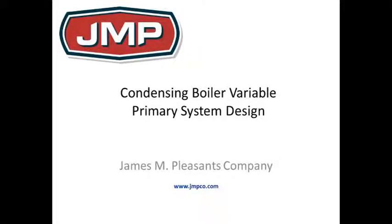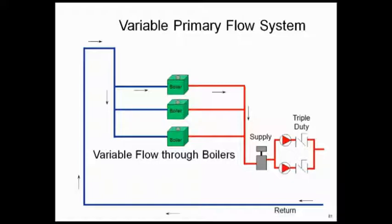Let's start with this variable primary flow concept — a great application we can make work. We have a lot of them out there, but it's a little bit sensitive to how you set them up. The concept here is one set of pumps pumping through the boiler and through the whole system — three boilers in parallel — pumping through all the heating coils, the air handlers, all the way back, and through the boilers as well. How do we control and stage those boilers becomes the question.